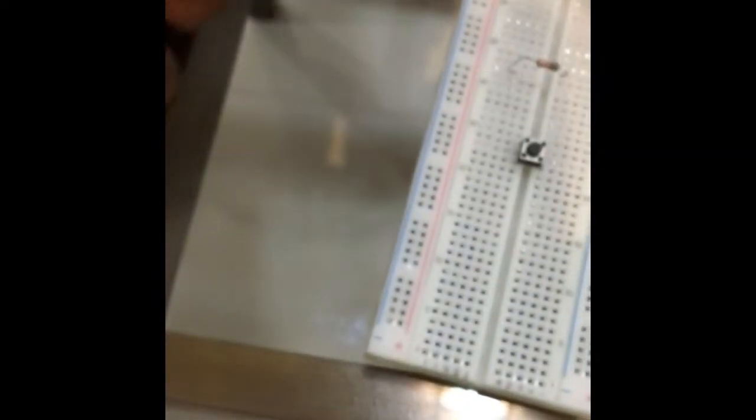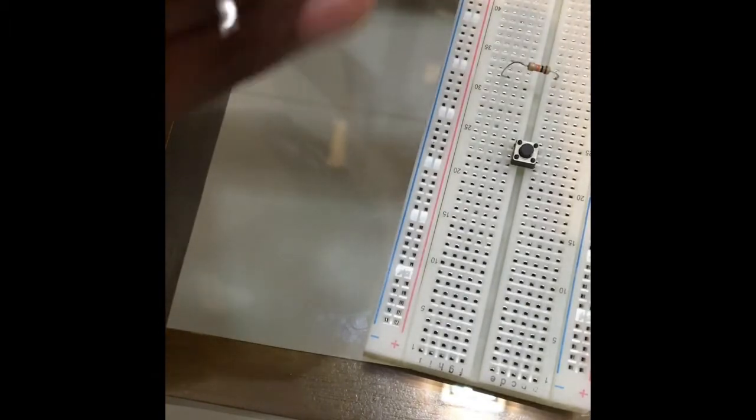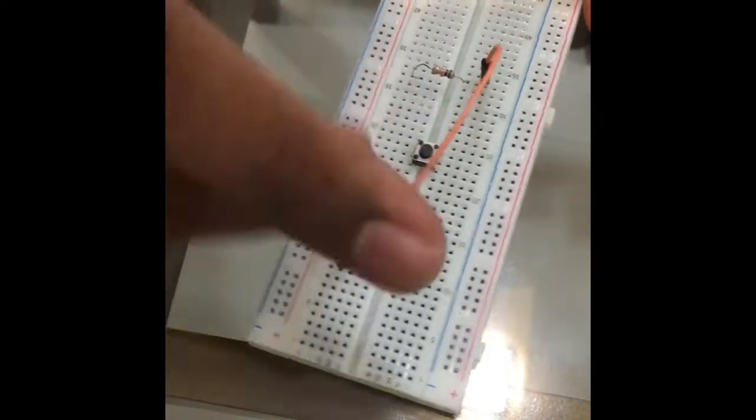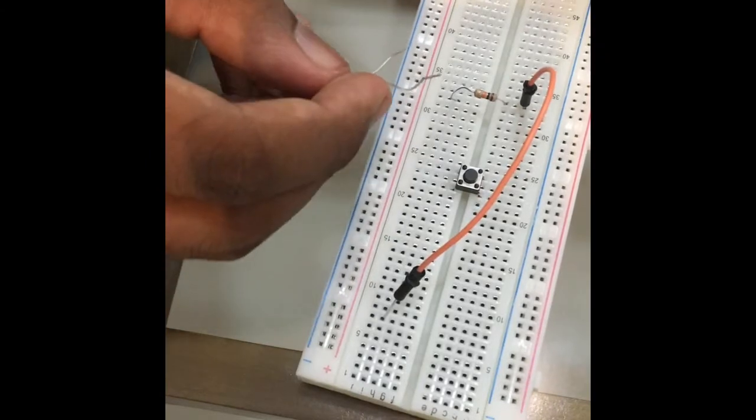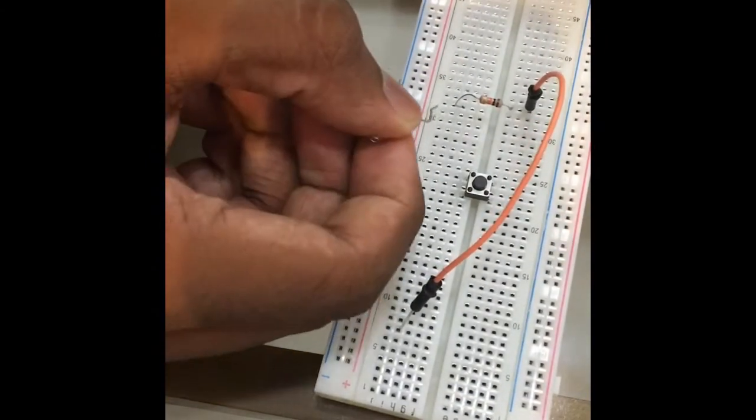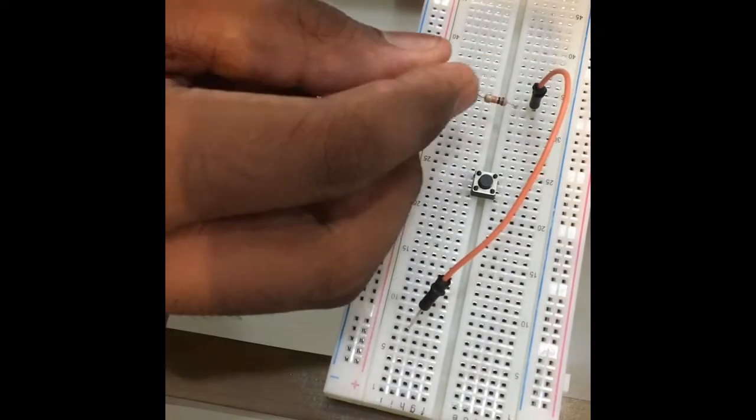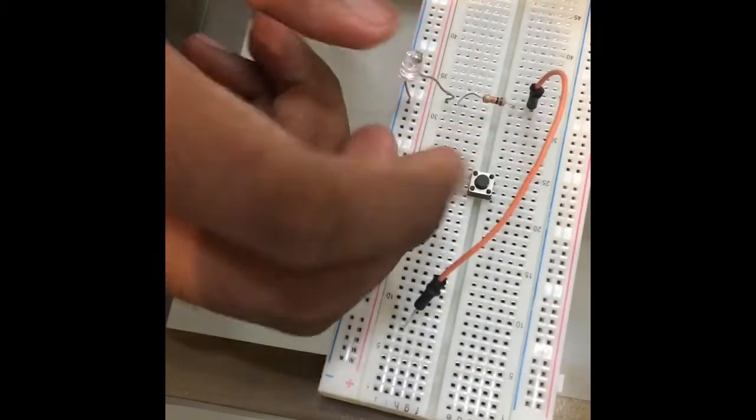Like this, and then the jumper wire to here. Then just leave it and fix the LED positive terminal to the resistor at the end and the negative terminal to the negative line of the board.